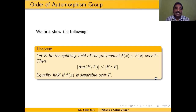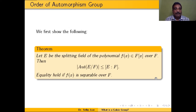E is the splitting field of f(x) means f(x) splits completely over E — that is, f(x) can be written as a product of linear factors in E, and E is the smallest field containing F with this property. And f(x) is separable means f(x) has no multiple roots; that is, all roots of f(x) are simple, or distinct, roots.